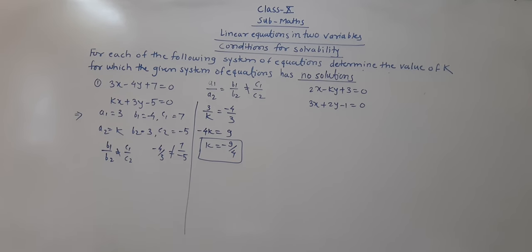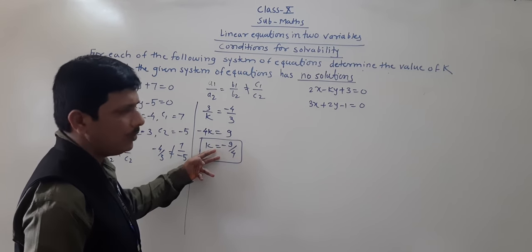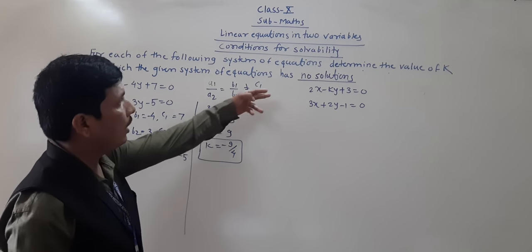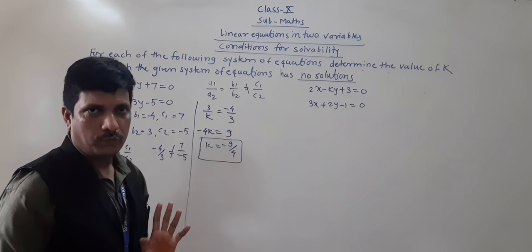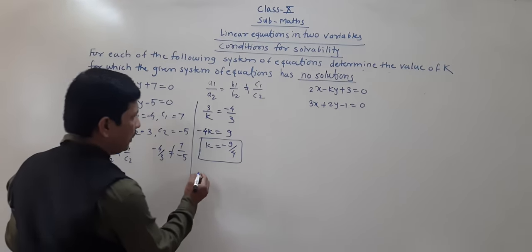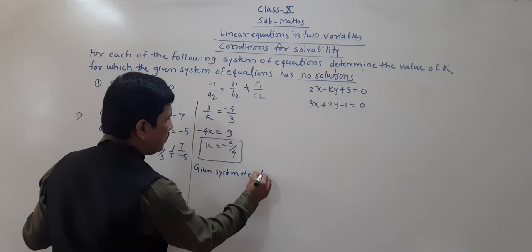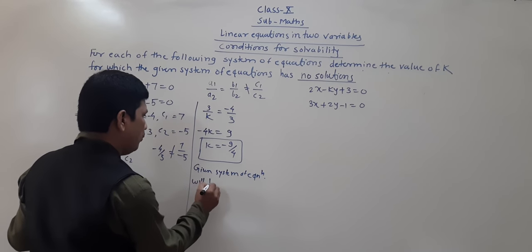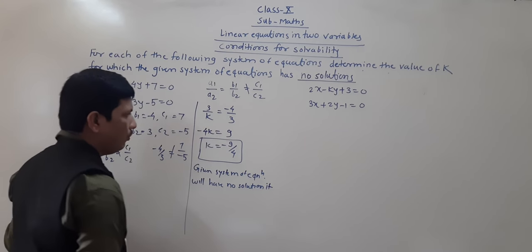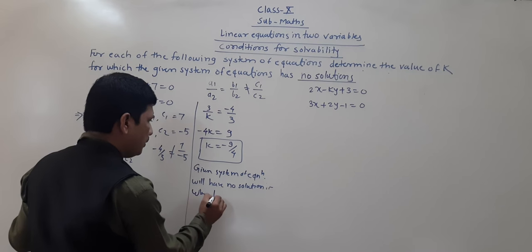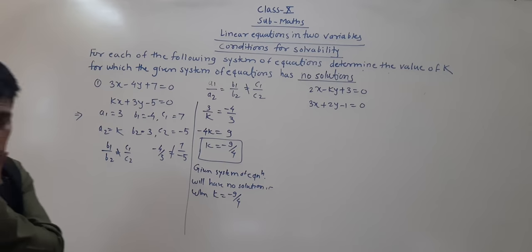So k is equal to minus 9 by 4. The given system of equations will have no solution when k is equal to minus 9 by 4.